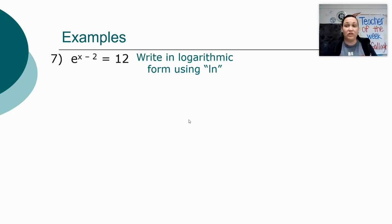Now if you're not used to the ln logs yet, that's okay. So when we do the wheel, we say log base e of 12 equals the exponent, the x minus 2. Log base e of 12 equals the x minus 2.